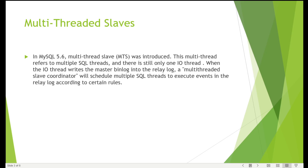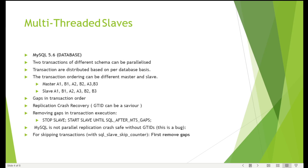Multi-thread slave was introduced in 5.6. Multi-threads refers to multiple SQL threads — there is still only one IO thread. When the IO thread writes the master binary log into the relay log and you enable MTS (multi-thread slave), there is a coordinator thread that reads data from the relay log and decides which transactions can be executed in parallel, sending them to worker threads. In 5.6, this was only possible when the multi-thread type was set to 'database'.